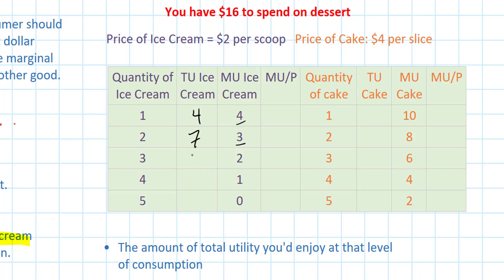I can add two to get a total utility of nine utils for the third scoop, and my total utility peaks at ten utils at the fourth scoop of ice cream. All I'm doing is adding up these marginal utilities to get the total utility at every level of consumption.